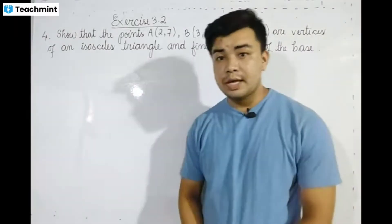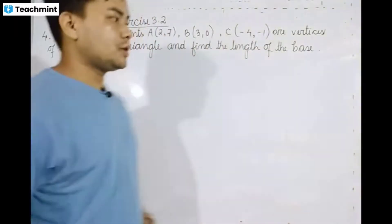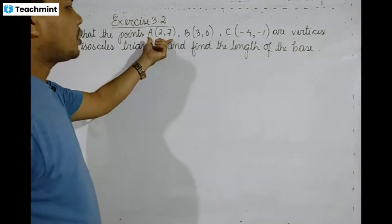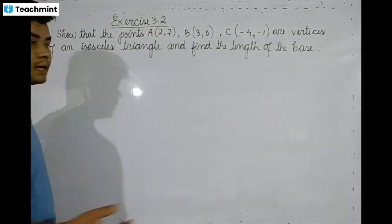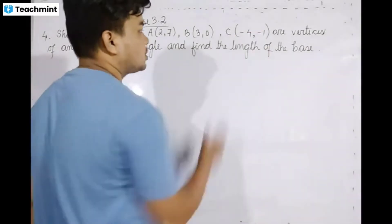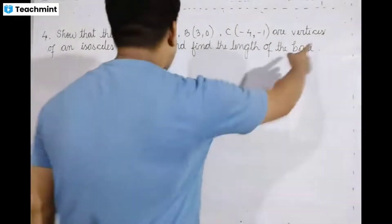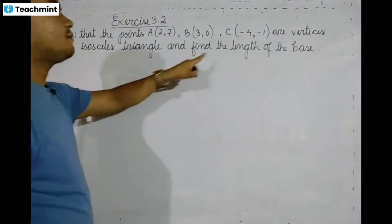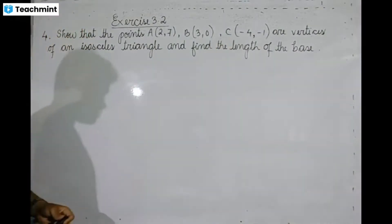Exercise 3.2, question number 4. Show that the points A(2,7), B(3,0), and C(-4,-1) are vertices of an isosceles triangle and find the length of the base.